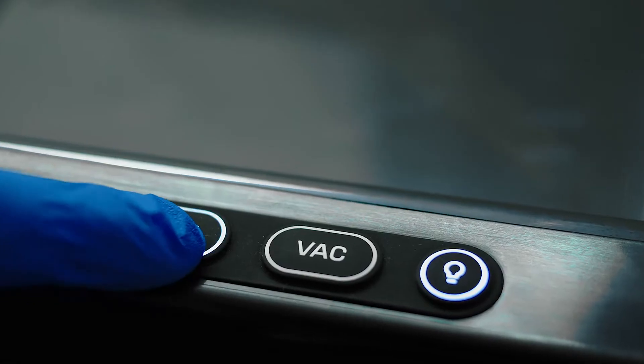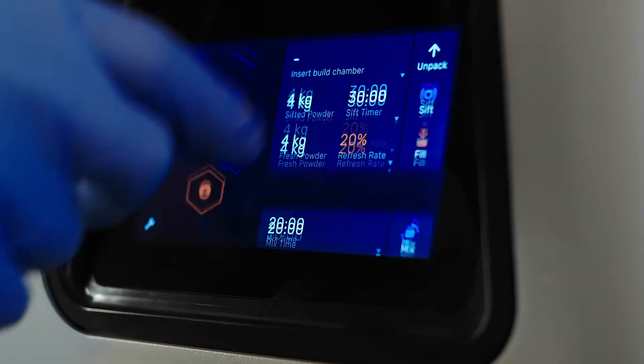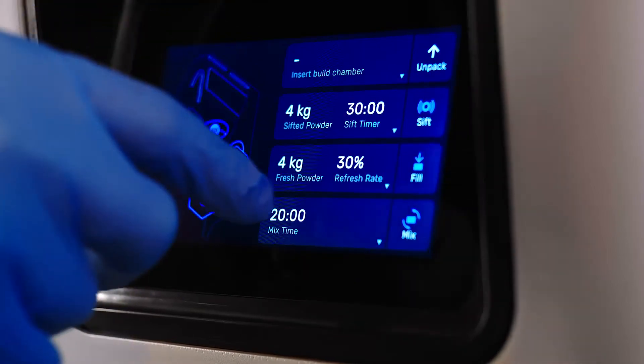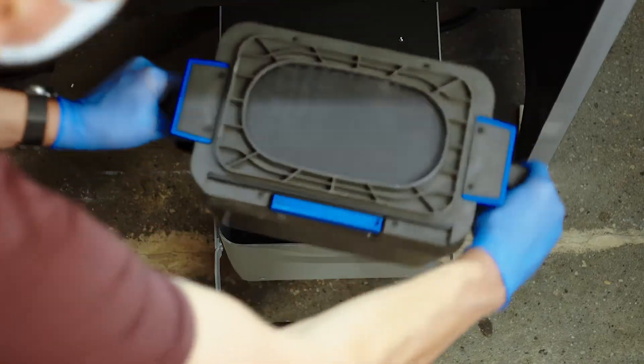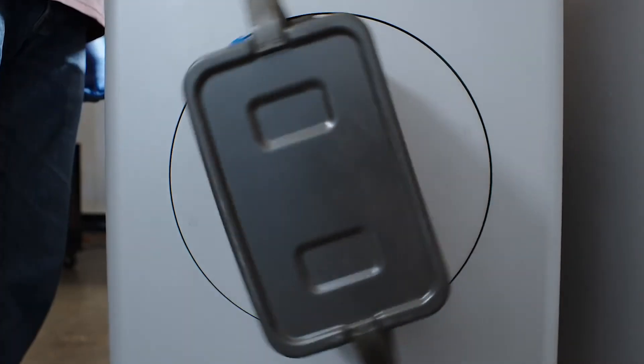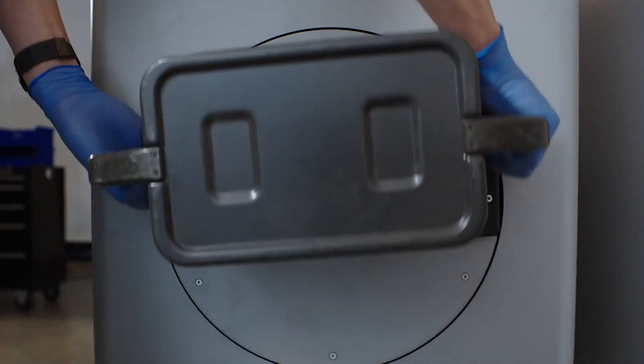Fuse SIFT will automatically dispense and mix used and new powder after you set the ratio. Reduce waste by recycling powder at a 30% material refresh rate. This means you can print up to 70% recycled powder.